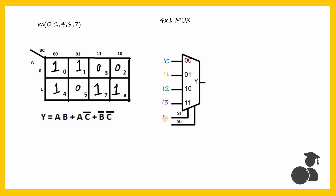Let us take B as S1 and C as S0. When B and C are both 0, it is the first column of our Kmap, where the output is always 1 independent of A. So we give I0 as 1. When B and C are 0 and 1, that is the second column of the Kmap, the output is the negation of A, or A-bar. When A was 0 we got 1, and when A was 1 we got 0. So I1 will be A-bar.